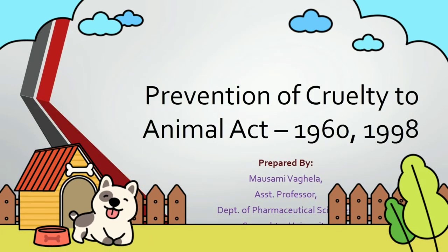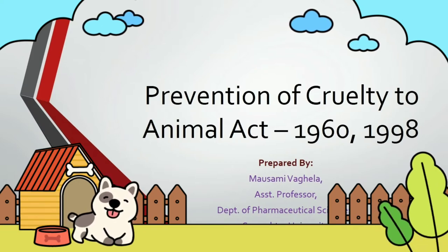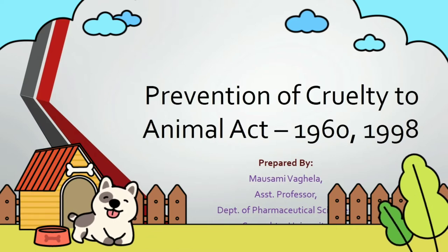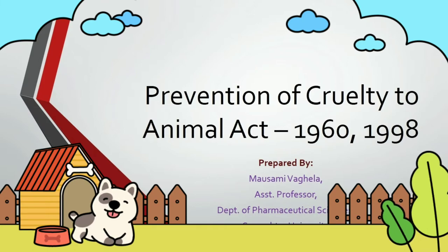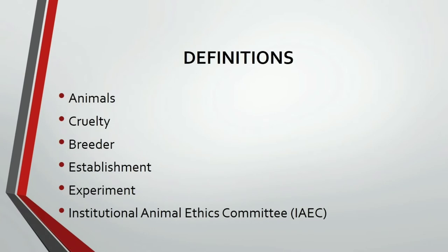Today we are going to learn about the Prevention of Cruelty to Animals Act. As the name suggests, this act was enacted to prevent any cruelty made on animals during experiments performed on them. Animals are widely used in different kinds of experiments to study the effect of medicinal products on the living body, because animals have similar systems to humans. However, these experiments lead to injuries, pain, or suffering to the animals, and may sometimes lead to their death. To decrease this kind of pain and suffering and to prevent men behaving cruelly towards animals, this act was introduced.